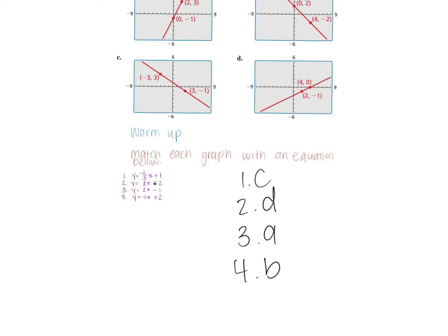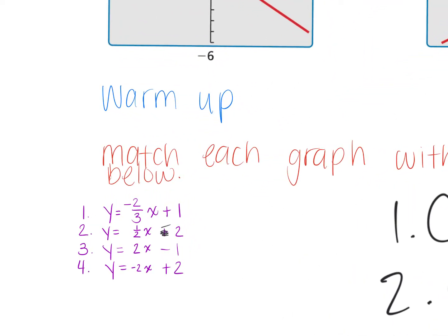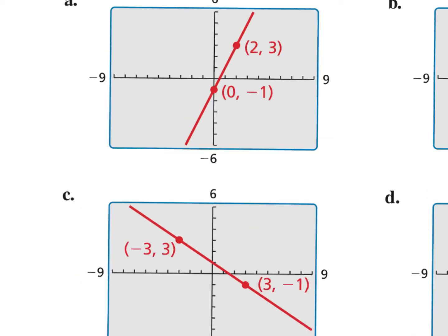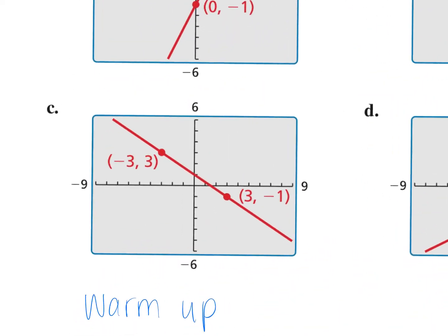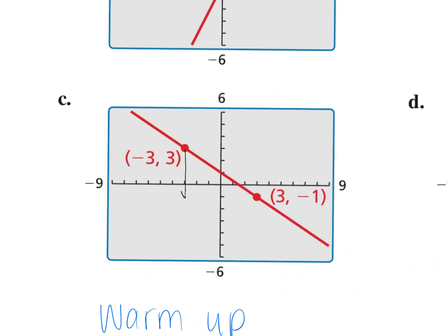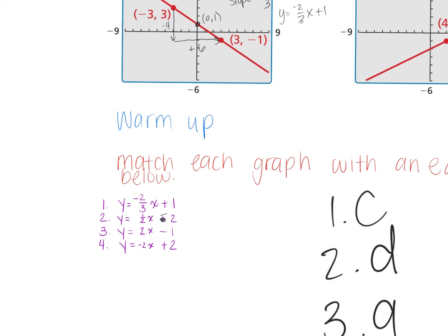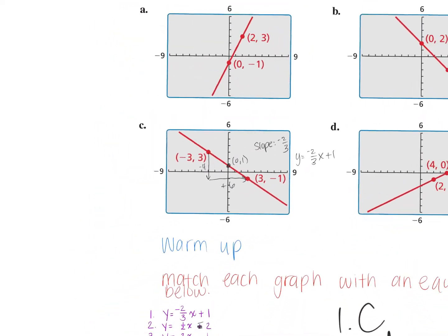Okay, people who got number one — how did you match it up with the letter C? Austin? So you went down four, and you went based on the slope. What was your slope then? Negative two-thirds. Okay. What else do you need for the equation? What's the y-intercept? It's zero comma one, so your equation should have been y equals negative two-thirds x plus one. So that matches up with number one, C.